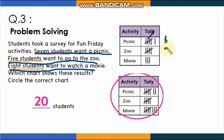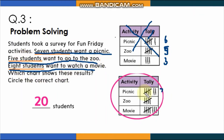Check the other chart: seven students want a picnic — count tally marks, seven, well done! Five students want to go to the zoo — count, five, well done! Eight students want to watch a movie — the number is eight. This tally chart is correct!